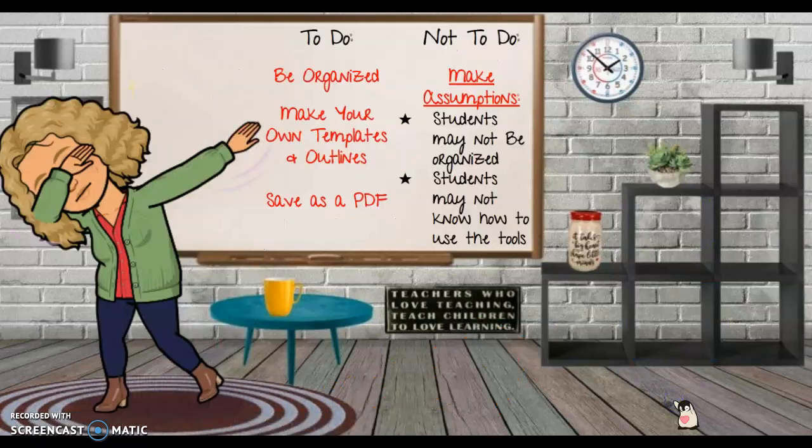My last slide covers the to-do list. The best things you need to do are: be organized — that includes you and your students. Once you have organized yourself and your students, make your own templates and outlines, then save those as PDFs. You can save them in your Google Drive or on your desktop in a folder, then upload them to Kami. That's the easiest way to get your students annotating, and you can also easily assign those PDFs to Google Classroom.